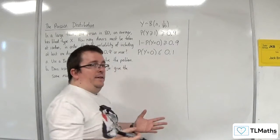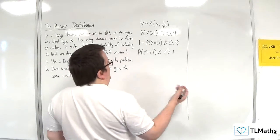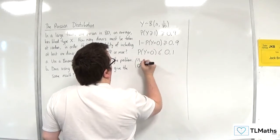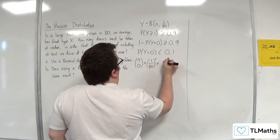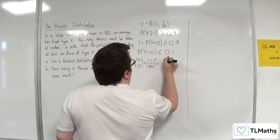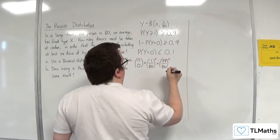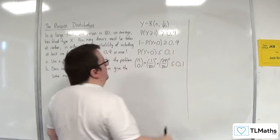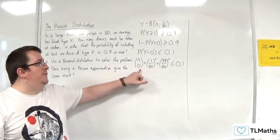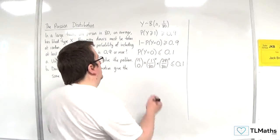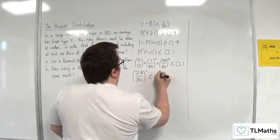Now because I don't know N, I'm going to have to use the formula for the binomial probability, which is NCR, so N choose 0, times by the probability to the power of 0, times by the probability of failure, so 79 over 80, to the power of N. That's got to be less than or equal to 0.1. Now N choose 0 is just going to be 1, regardless of the value of N, so we've just got 79 over 80 to the power of N has got to be less than or equal to 0.1.